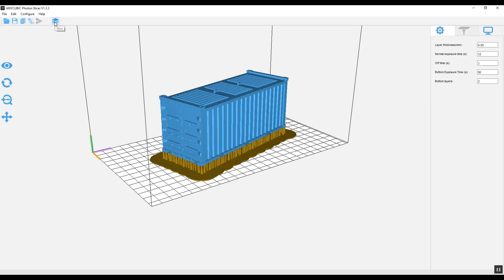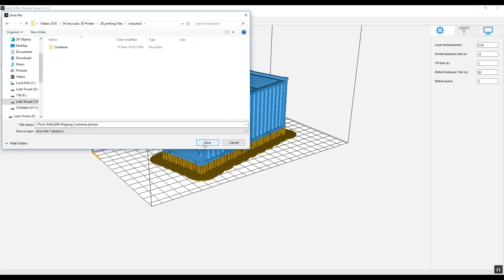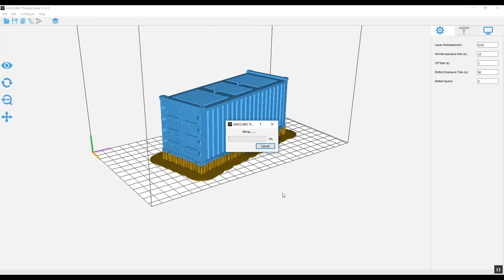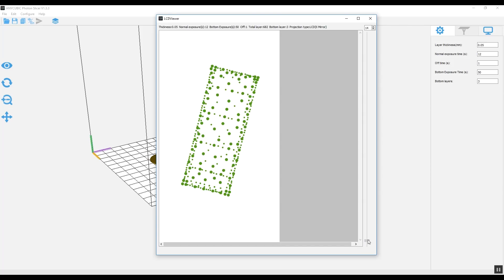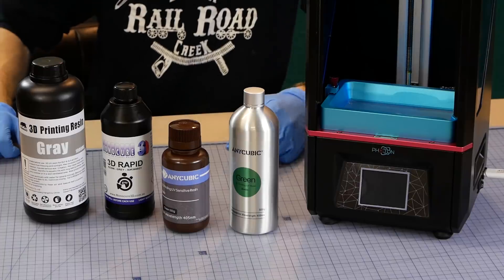Once the supports are added and the exposure settings have been set we can slice the model and send it to the printer. The settings will vary depending on the resin you are using but I've found between 10 and 12 seconds is a good starting point. If you're using a new resin that you haven't tried before I suggest designing a small test cube that you can print to see which settings give you the best results before committing to a nine hour print.